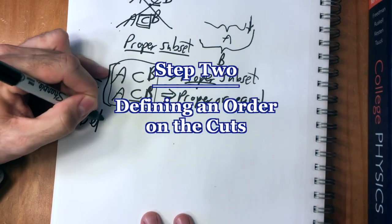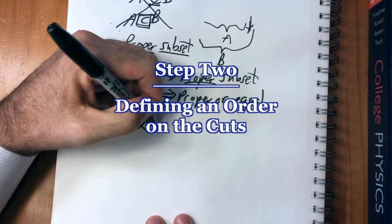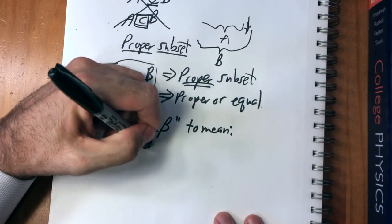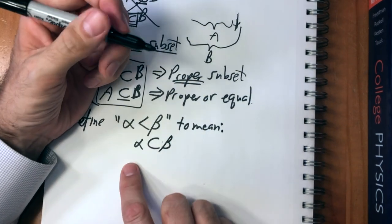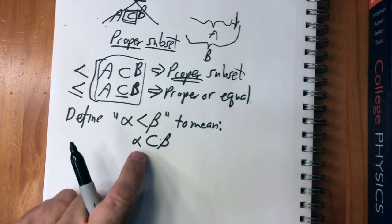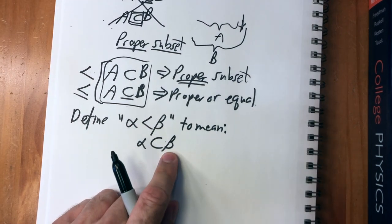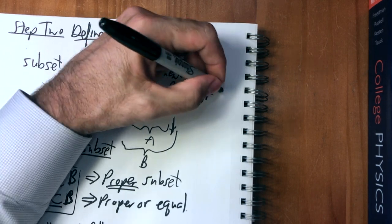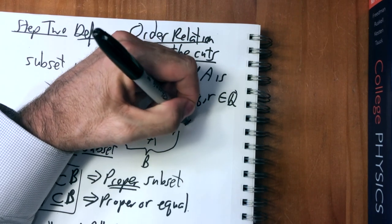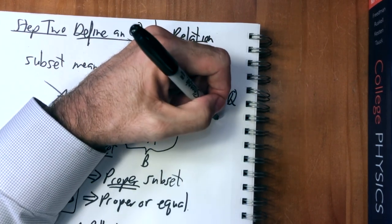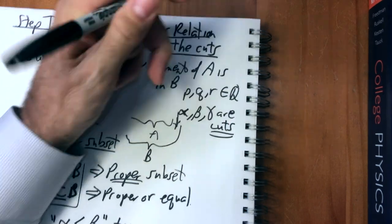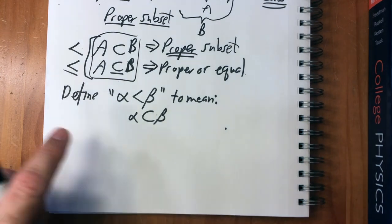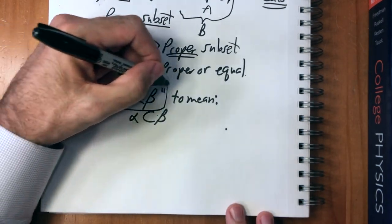We're going to define alpha less than beta to mean alpha is a proper subset of beta — not equal. I also forgot to mention: when doing this proof, regular letters p, q, r are elements of the rational numbers, while alpha, beta, gamma are cuts. I'll always use Greek letters for cuts and p, q, r for elements of those cuts.